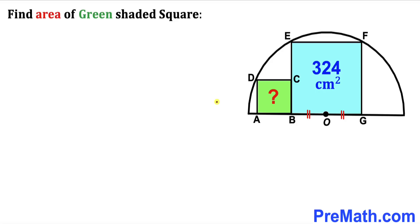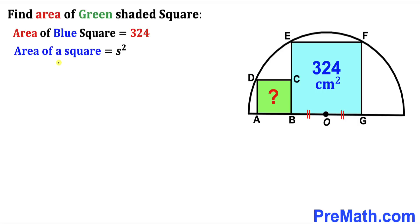We know that the area of this blue square is 324 centimeter square. Recalling the area formula: area = s², we can write s² = 324. Taking the square root on both sides, the side length s = √324 = 18 centimeter.